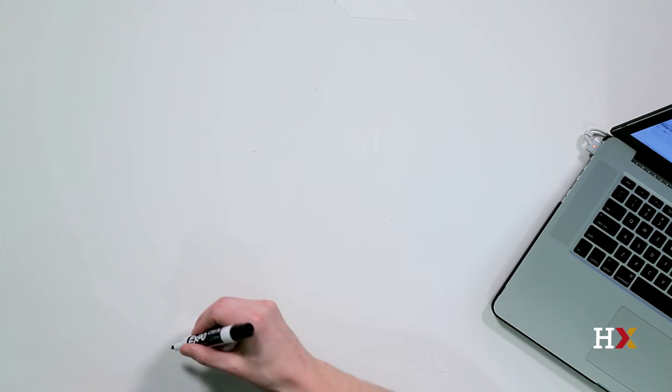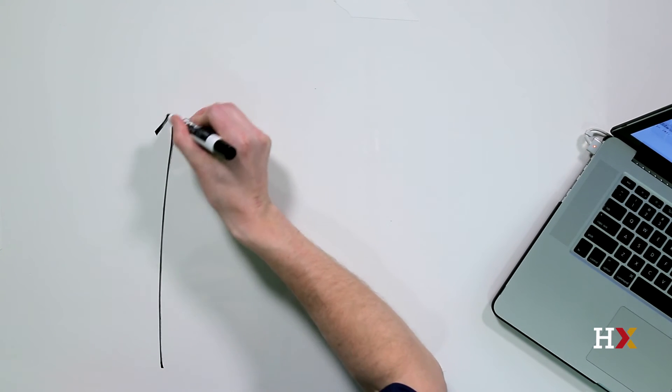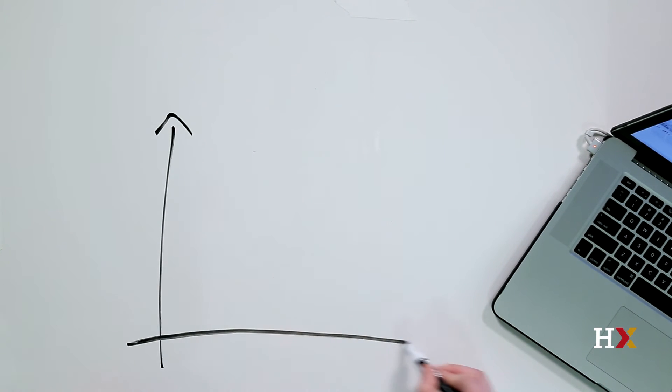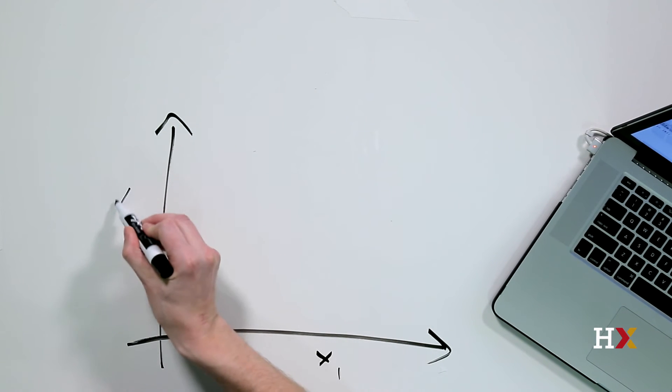Let's look at the KNN method on the whiteboard. Let's first set up a coordinate system. We have measured two different features on data. Let's call this feature x1, which could be someone's weight, and this feature is x2, which could be someone's height.